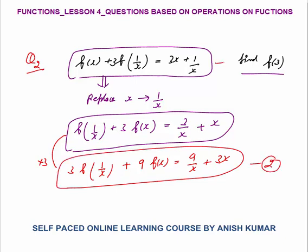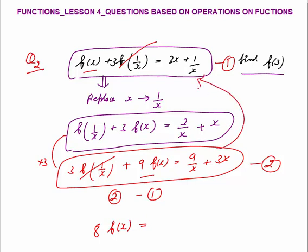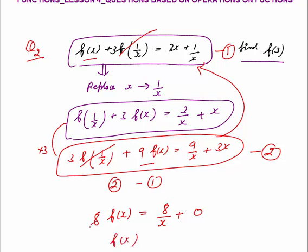Now subtract equation 1 from equation 2. The 3·f(1/x) terms cancel. You are left with 9·f(x) − f(x) = 8·f(x) on the left. On the right: 9/x − 1/x = 8/x, and 3x − 3x = 0. So 8·f(x) = 8/x, and the 8 cancels, giving f(x) = 1/x.